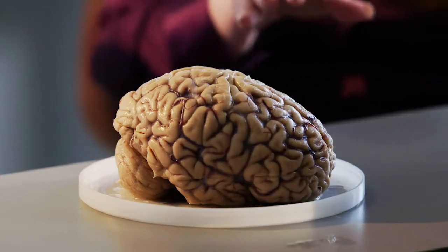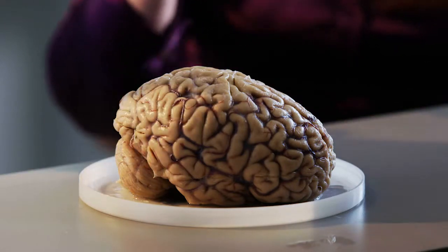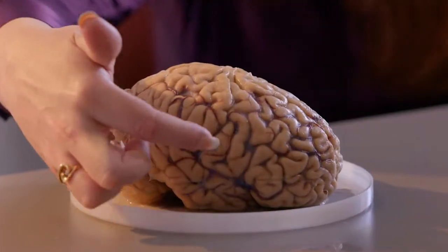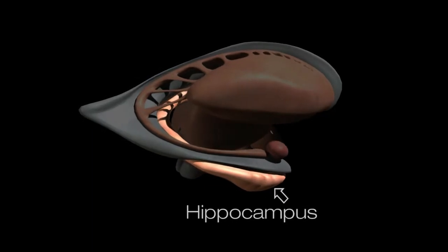Are there regions of the brain that are particularly susceptible? Yes. This is a real human brain that's been fixed. This is front, this is back. You've got a little strip down there that's your motor cortex, which allows you to control everything, and then a strip right in front of that which is your somatosensory cortex. But what's really important for memory? The first thing that goes in Alzheimer's disease is a little bit right behind your ear, which is inside, sort of curled up on itself, and it's called the hippocampus.